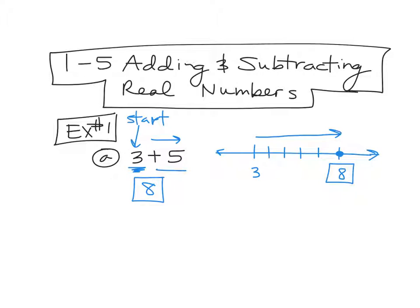Which I know seems very simple because you guys know what 3 plus 5 is. Where it gets a little more — you just have to pay a little better attention — is when you start adding negatives into that. So let's say we're doing, instead of 3 plus 5, we're going to do 3 plus a negative 5.